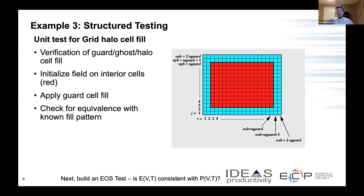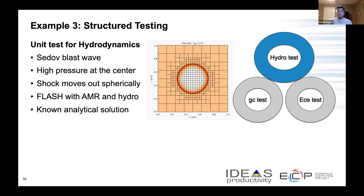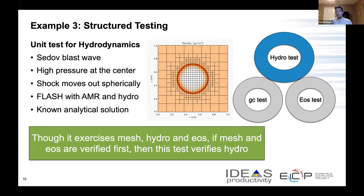Similarly, a unit test can be written to verify other parts of the computation, like computing the energy from the pressure and the temperature. Eventually, all those unit tests build together to make something that's a high-level test. Here, this is a unit test for hydrodynamics from the Sedov blast wave. The Sedov blast wave is simulated using a grid and equation of state that are previously tested. The Sedov wave has a known analytical solution, which provides an error estimate for the implementation. Out-of-tolerance errors at this stage indicate a problem specific to the hydrodynamics, since the cells and equation of state were already tested. In addition, plotting errors versus space and time helps to train graduate students.